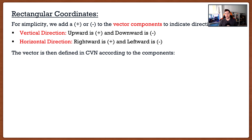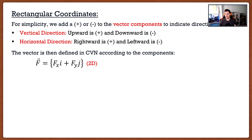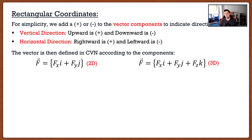So remember when I mentioned the word 'notation'? In Cartesian vector notation we define our vector according to its components. A vector F is written as fx·i plus fy·j, where i is the x-direction and j is the y-direction — that's for 2D. For 3D it would simply be fx·i + fy·j + fz·k, just adding that third direction k.